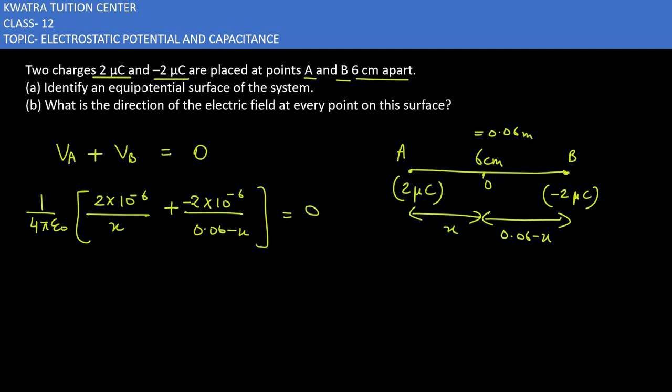If you note carefully, we can take common from above: 1/(4πε₀) is common, and 2×10⁻⁶ is common. Taking these common, the first value 1/x, if this value goes to the right side it will become positive.